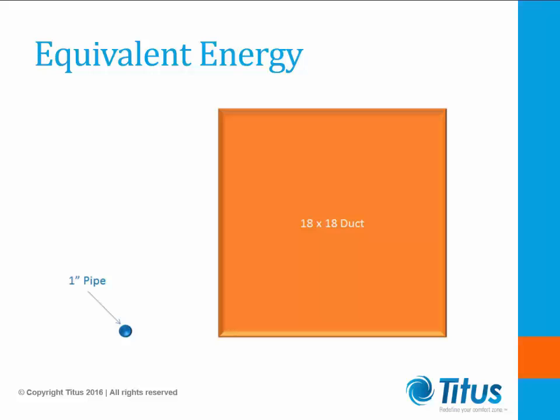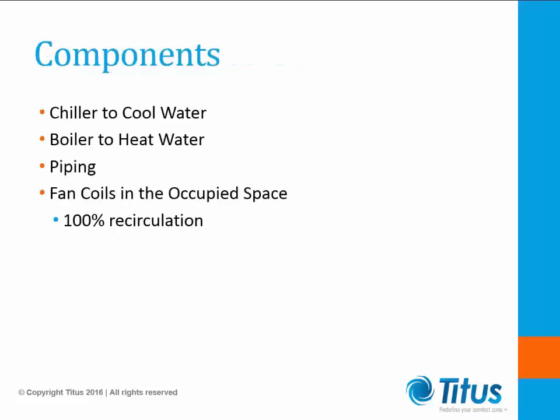Part of designing the HVAC system for any project is the equipment and installation cost. These cost requirements ultimately guide the design and construction of the project. The major components of an all-water system are the chiller, boiler, pumps, fan coil units, and of course the piping to tie it all together. The chiller will typically run at 45 degrees F, while the boiler used to operate at 180 degrees. Today, with condensing boilers, we see temperatures as low as 120 degrees F.